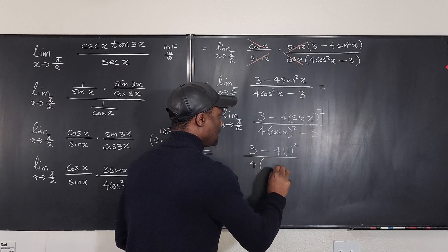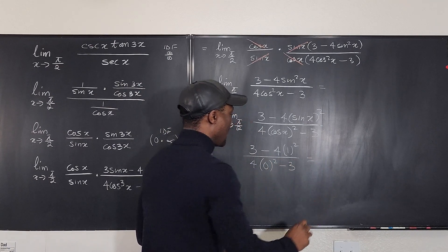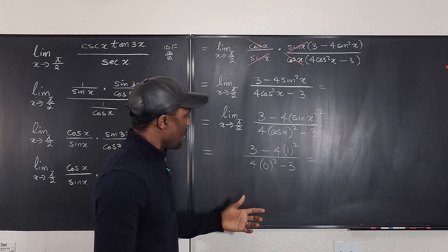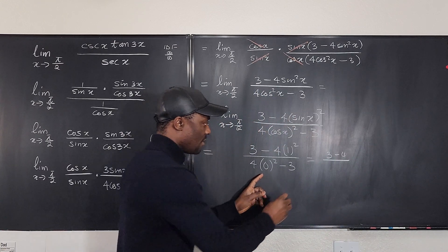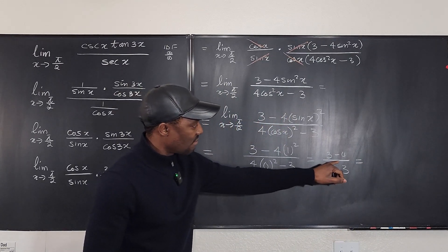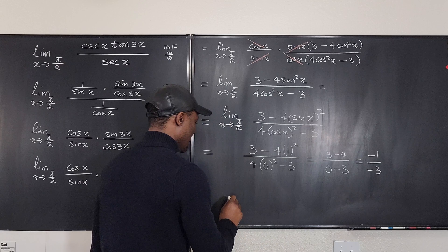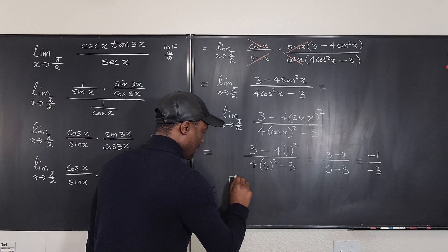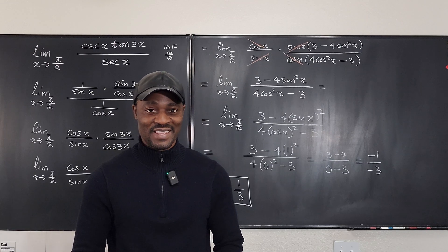Plugging in π/2: sine(π/2) = 1, so the numerator is 3 − 4(1)² = 3 − 4 = −1. Cosine(π/2) = 0, so the denominator is 4(0)² − 3 = −3. The answer is −1 over −3, which equals one third. And remember: those who stop learning have stopped living — bye bye!